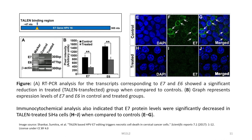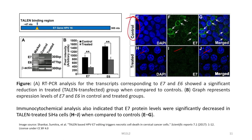In this figure, panel A shows the RT-PCR analysis for transcripts corresponding to E7 and E6, which showed a significant reduction in the treated group when compared to the control group. Panel B shows graphs representing expression levels of E7 and E6 in control and treated groups. Immunocytochemical analysis also indicated that E7 protein levels were significantly decreased in TALEN-treated cervical cancer cells (H, I, J) when compared to the control (E to G).